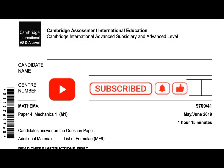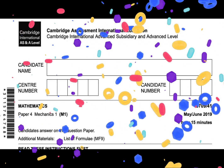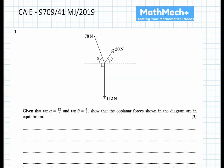In today's paper we're going to do a Cambridge AS Mathematics paper 4, Mechanics M1, and the code is 9709/401. In question one we've been given two unknowns alpha and theta, and we're also given tan theta and tan alpha, so we're going to do our right angle triangles and solve for sine and cosine.